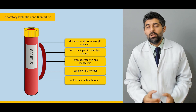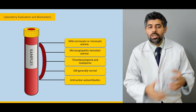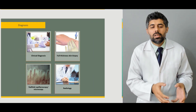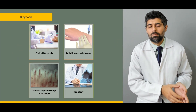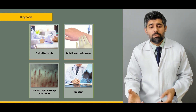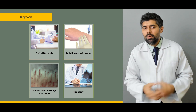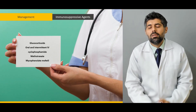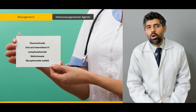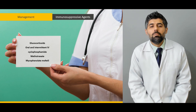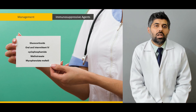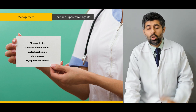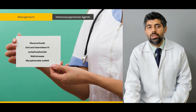Then we'll study about the diagnosis of scleroderma, how the laboratory evaluation and biomarkers help us in the diagnosis, and how the clinical diagnosis of scleroderma takes place from skin biopsy to microscopy to radiology. We'll study about all aspects of clinical diagnosis. Then we will study about the treatment and management of systemic scleroderma, why immunosuppressive agents are the first line of drugs used, which immunosuppressives to use, which to avoid, what to give, and how they work.